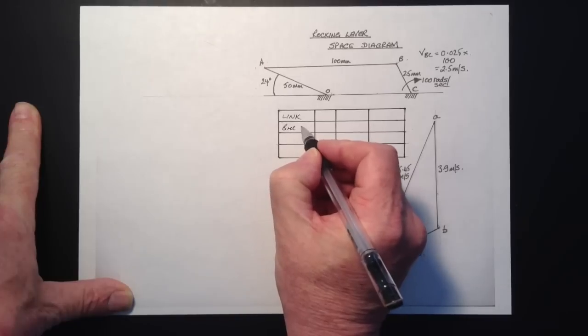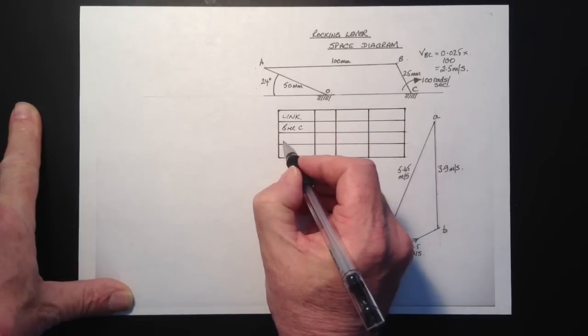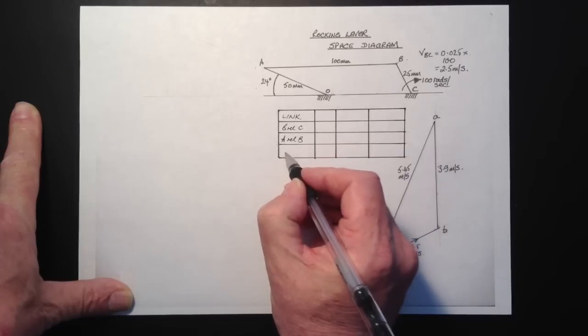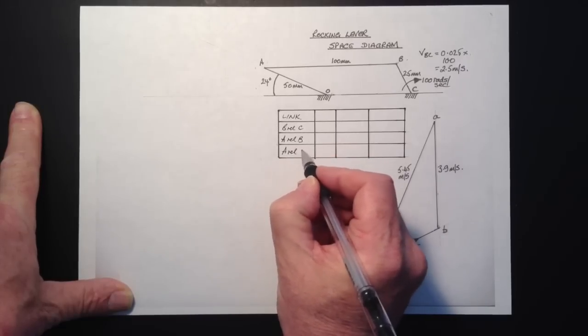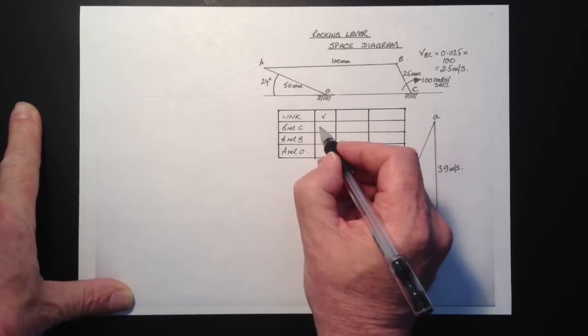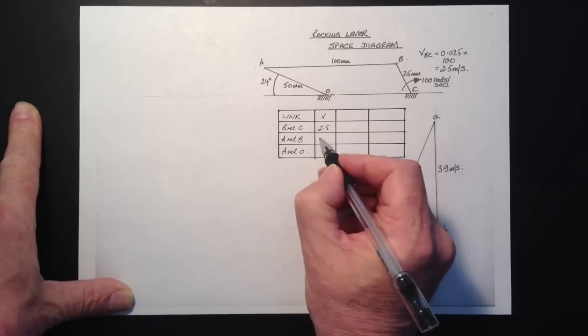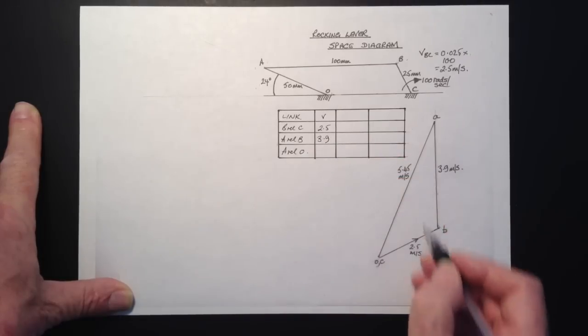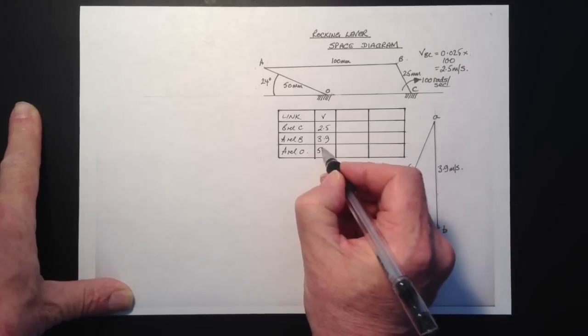Into the table we make one entry for each link. So we've got BC, A to B and AO. And now we're going to put in what we know. So first of all the velocities which we've measured from our velocity diagram. So let's just pop those into the table as you can see, so 5.45.